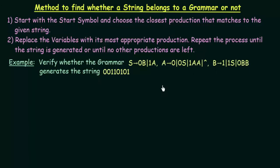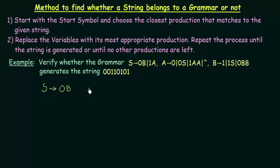The first step says start with the start symbol. Here S is our start symbol. We need the string 00110101, and the first symbol is 0. In order to get 0, we look at what S can produce: S gives 0B and also 1A. If I choose 1A, then 1 will be the first symbol, but I don't want that. If I choose 0B, I get 0 as the first symbol, which is what I want. So I will choose 0B — using the production S gives 0B.